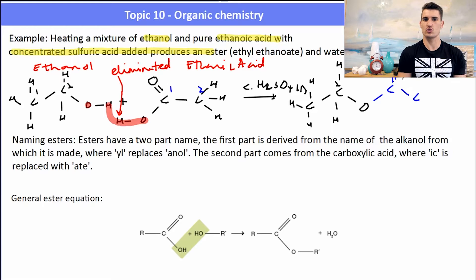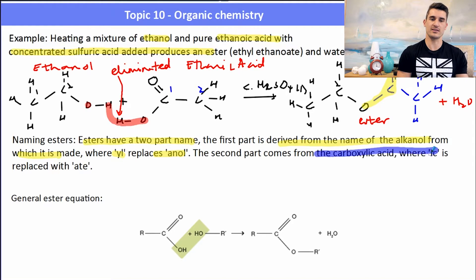Okay, well naming esters: esters have a two-part name. The first part of the name is derived from the alcohol. So the alcohol takes the first part of the name and we replace the -ol section or the -anol section of the alcohol and replace it with -yl. So we had ethanol, so we're going to replace that and change it to ethyl. Ethanoic acid was our carboxylic acid, so we cut the -ic part of the acid and the 'acid' and replace it with -oate. So we have ethyl ethanoate. That's where the name of the ester comes from. The first part comes from the alcohol, the second part comes from the acid.